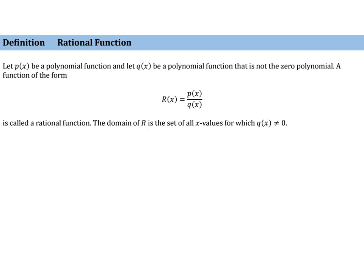A rational function is simply a ratio of two polynomials. So if you look at the term rational, you see the word ratio. That's a good way to remember it.